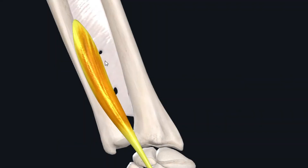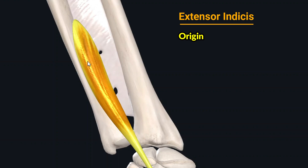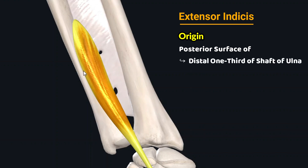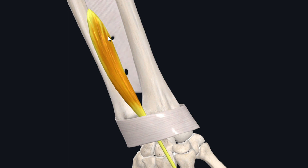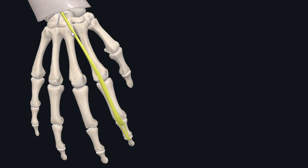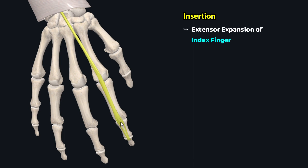The last muscle of today's tutorial is the extensor indicis muscle. This muscle has its origin from the posterior surface of the distal one-third of the shaft of the ulna and the adjacent interosseous membrane of the forearm. After origin, the muscle fibers form a muscle belly which travels down towards the wrist, where it forms a muscle tendon. At the wrist, this tendon travels deep to the extensor retinaculum, and within the hand it travels down inferolaterally to insert onto the extensor expansion of the index finger.